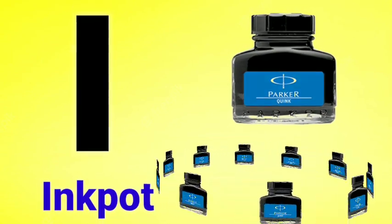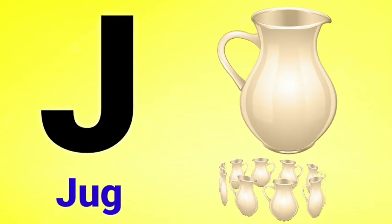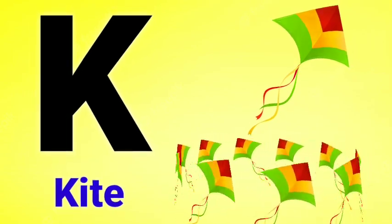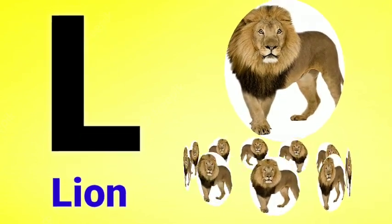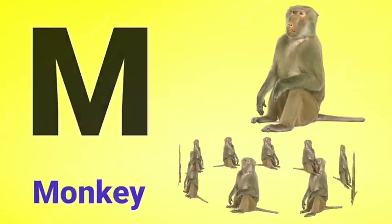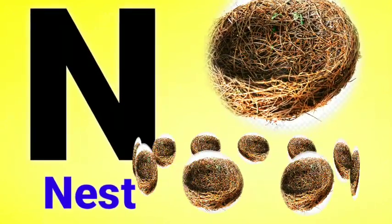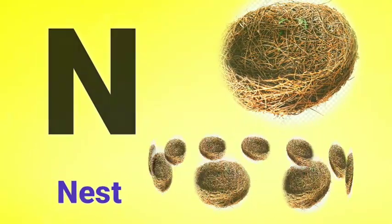I for Ink Pot, J for Jug, K for Kite, L for Lion, M for Monkey, N for Nest, O for Orange.